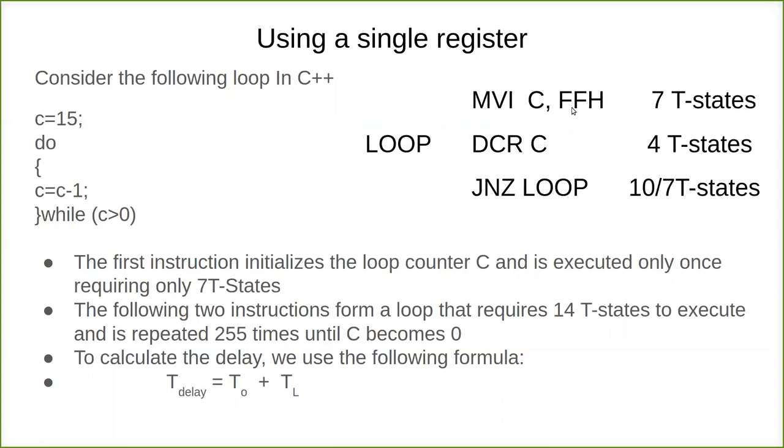Imagine FFH, which is equal to 256 in decimal. For explanation purposes, let's use MVI C, 3. When it becomes 3, the DCR makes it 2.